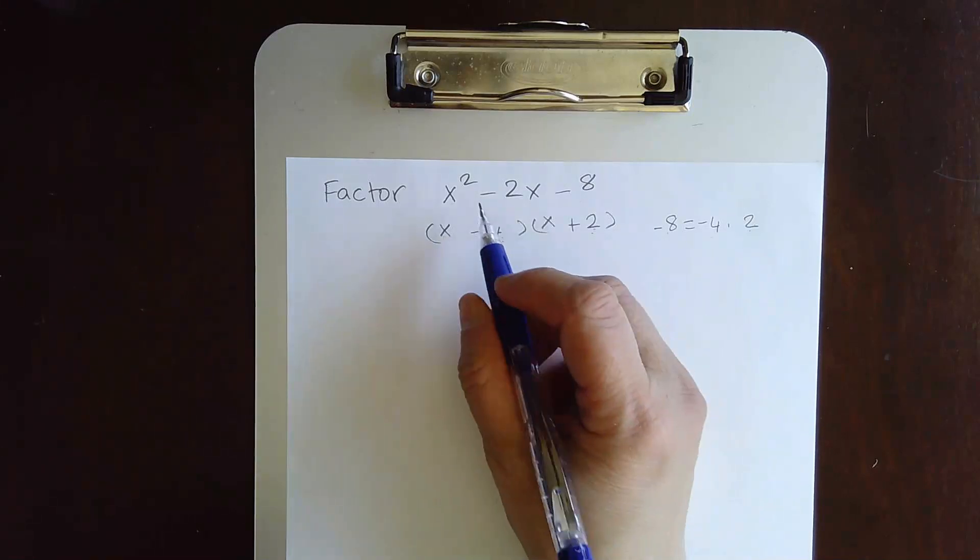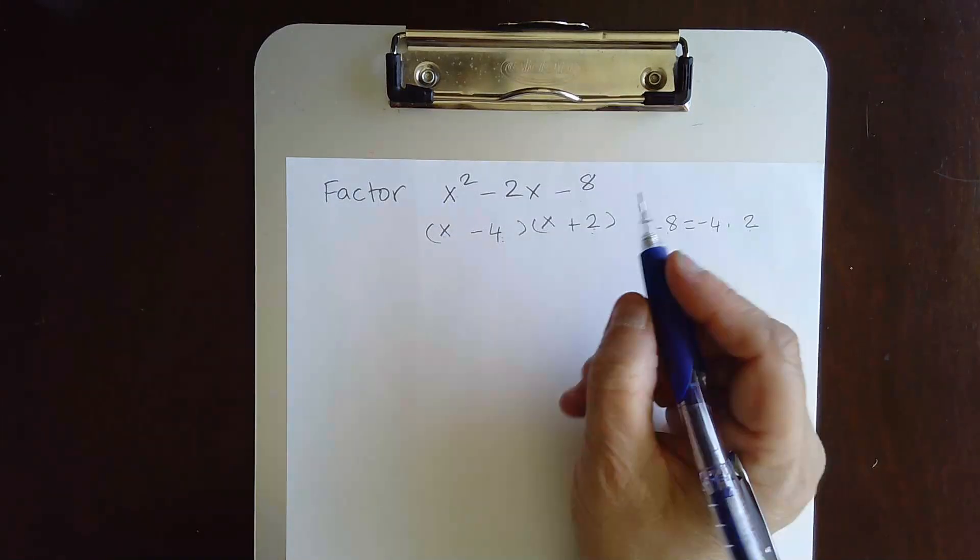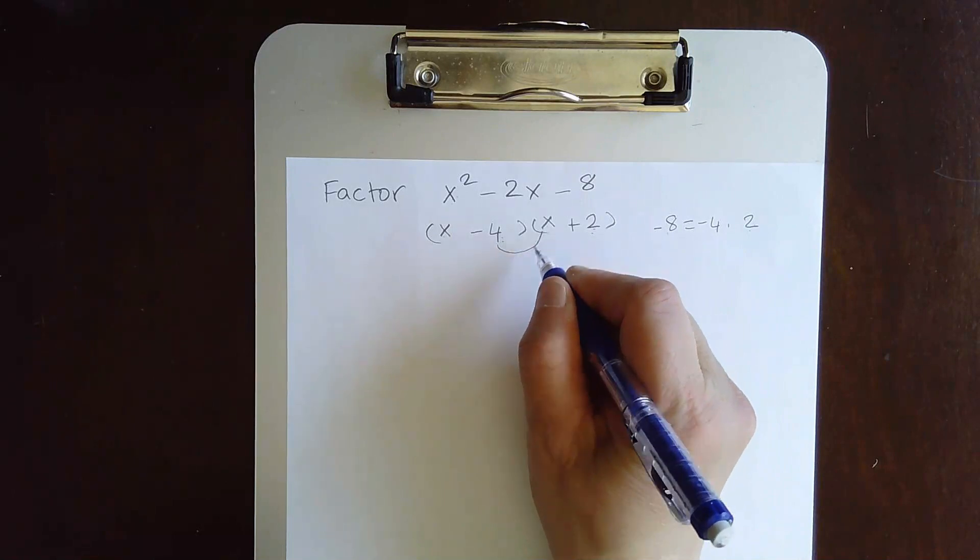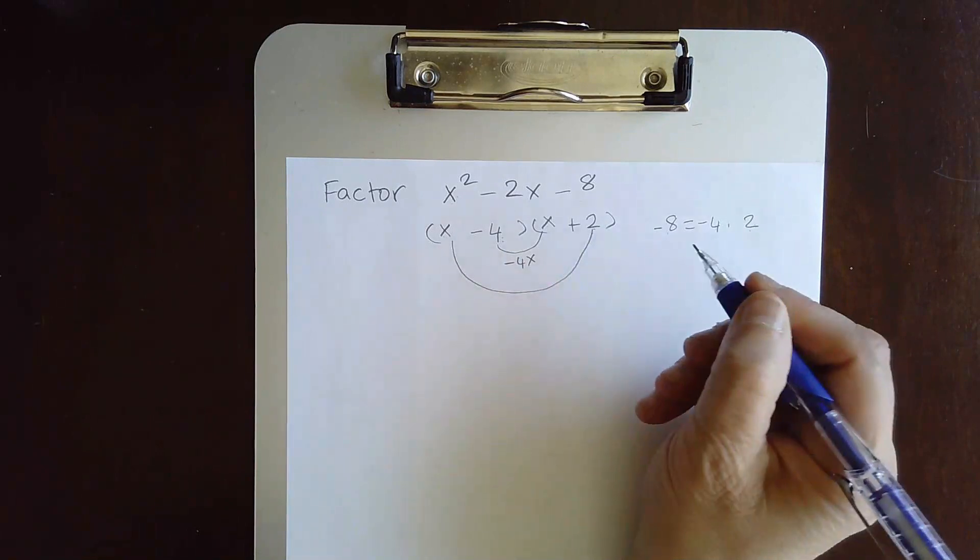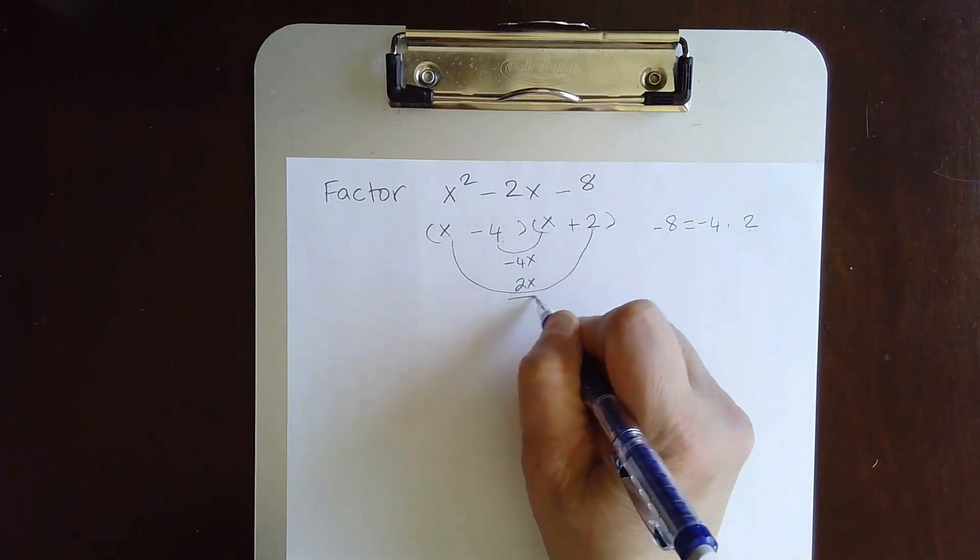x times x gives you x squared. To check the middle term, you multiply these two. The innermost, you get negative 4x. The outermost, you get that 2x. If you add them up, you should get negative 2x. And that's your middle term.